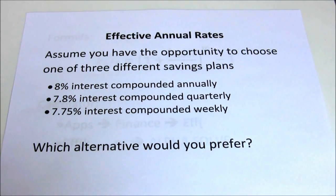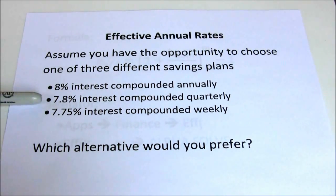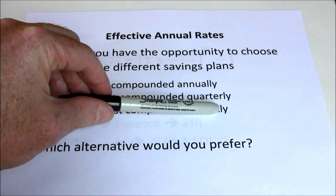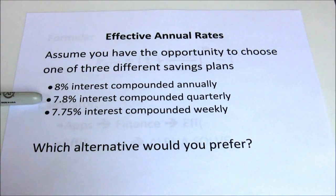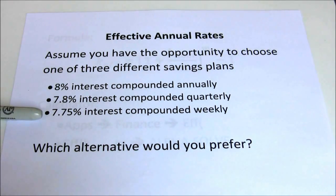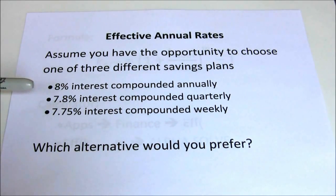We know the higher the interest rate the better off we are, but also the more frequently we compound the better off we are. So here we have a trade-off. Would we rather get a little bit higher interest rate or would we rather have a little lower interest rate but have it compounded more frequently? Is 7.8% compounded quarterly better than 8% compounded annually? Or is 7.75% compounded weekly better than either one of those alternatives?